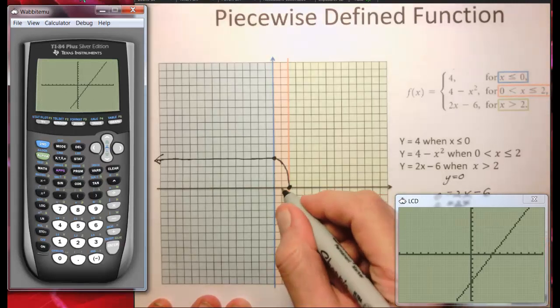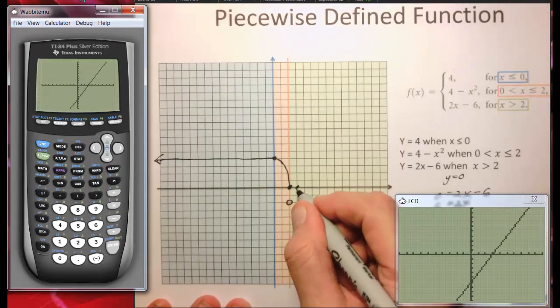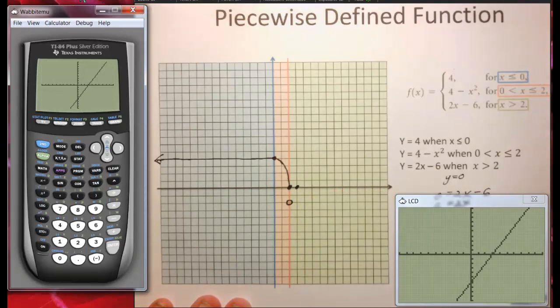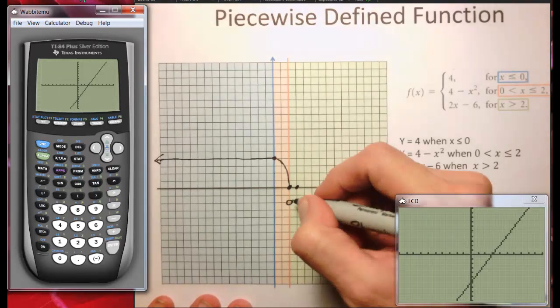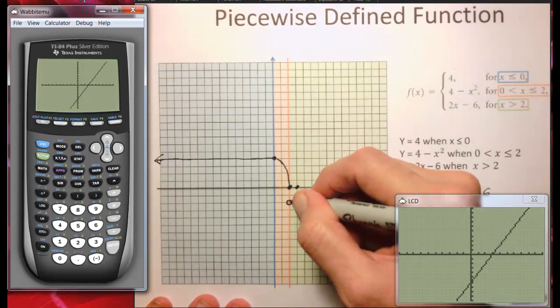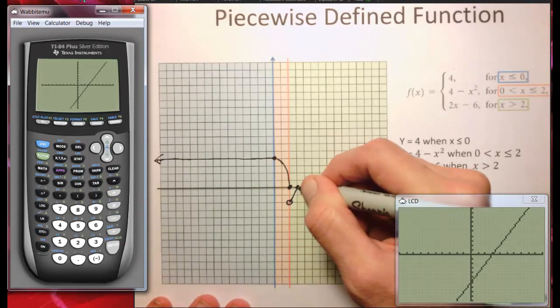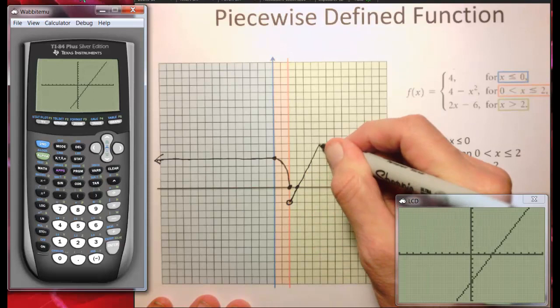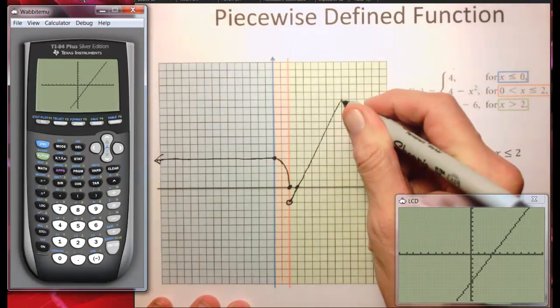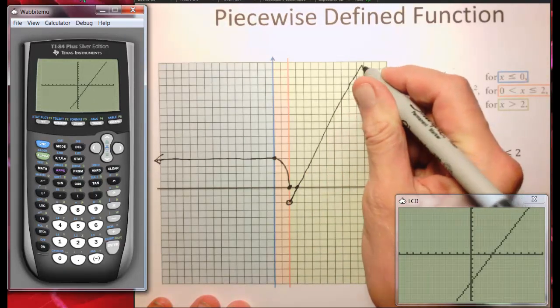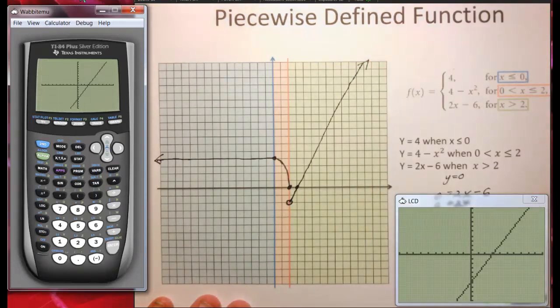So here at 1, 2, 3, we're going to cross the y-axis. And now I don't have a ruler with me, so I'm just going to have to do the best I can. There, that's the best I can do.